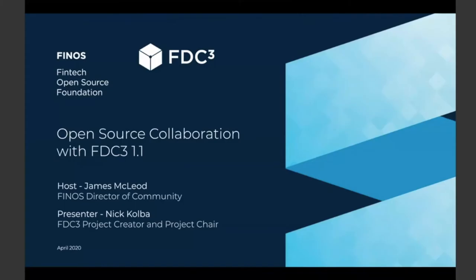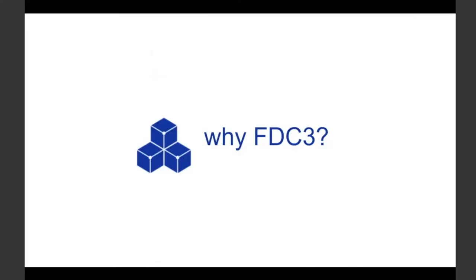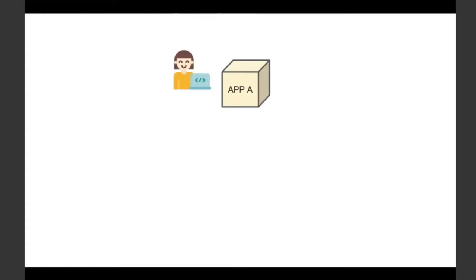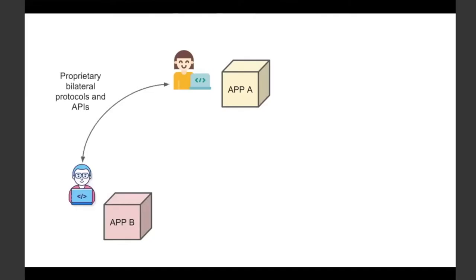I'm going to talk to you all about FDC3. The first real question is: why FDC3? Why put these kinds of standards together? Let's take a look at the world before FDC3. Apps get developed as they always have, and we always have more than one app. If we want these apps to interoperate, the way to do this in the past has been through creating proprietary bilateral protocols and APIs, where developers from different teams — usually in different organizations — work out how they're going to pass messages back and forth.